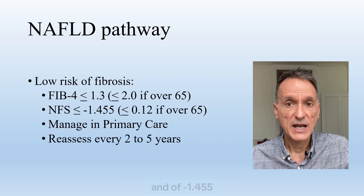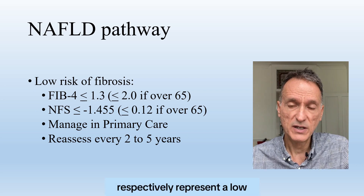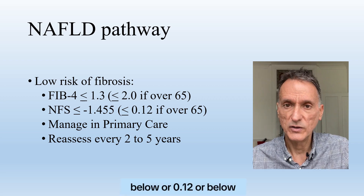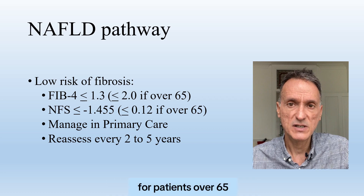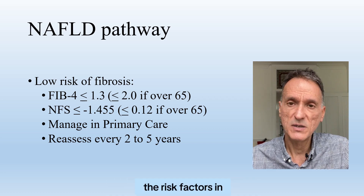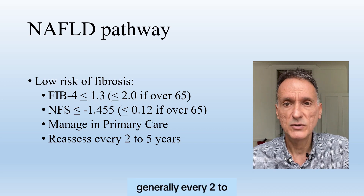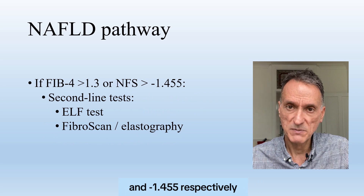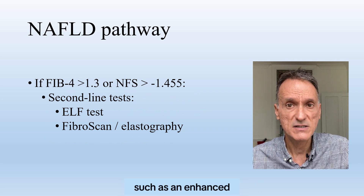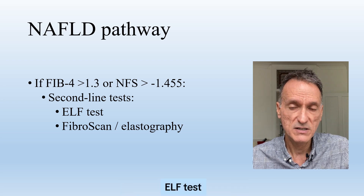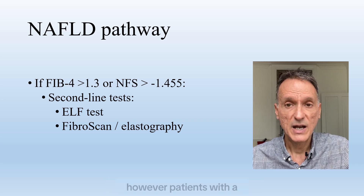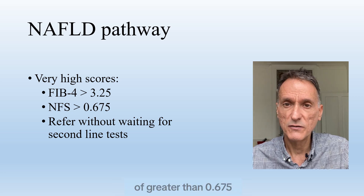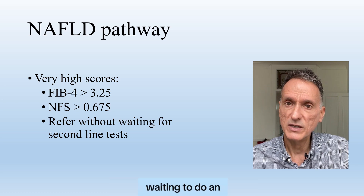Values of FIB-4 of 1.3 or less, and NAFLD fibrosis score of minus 1.455 or less, represent a low risk of advanced fibrosis. Higher cut-off points of 2.0 or below and 0.12 or below respectively should be used for patients over 65. In these cases, we will just manage the risk factors in primary care and reassess periodically, generally every 2 to 5 years. FIB-4 or NAFLD fibrosis score values greater than 1.3 and minus 1.455 respectively should have second-line tests, such as an enhanced liver fibrosis blood test, also known as an ELF test, or imaging such as a fibroscan or elastography. However, patients with a very high FIB-4 score greater than 3.25, or a NAFLD fibrosis score of greater than 0.675, should be referred without waiting to do an ELF test, fibroscan, or elastography.